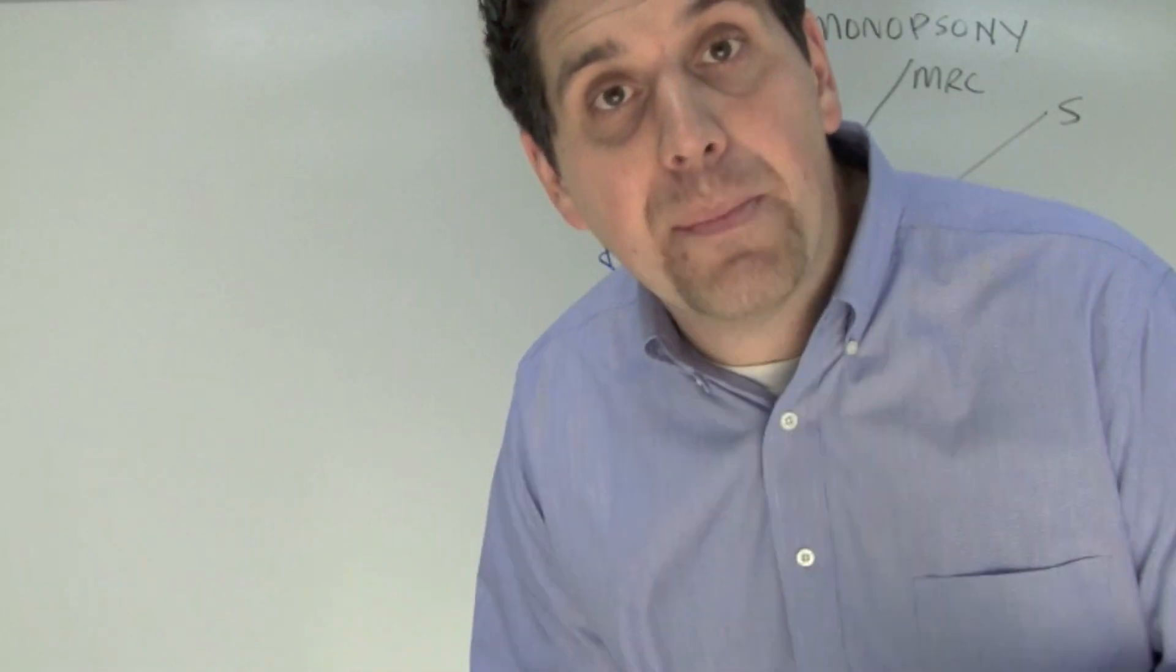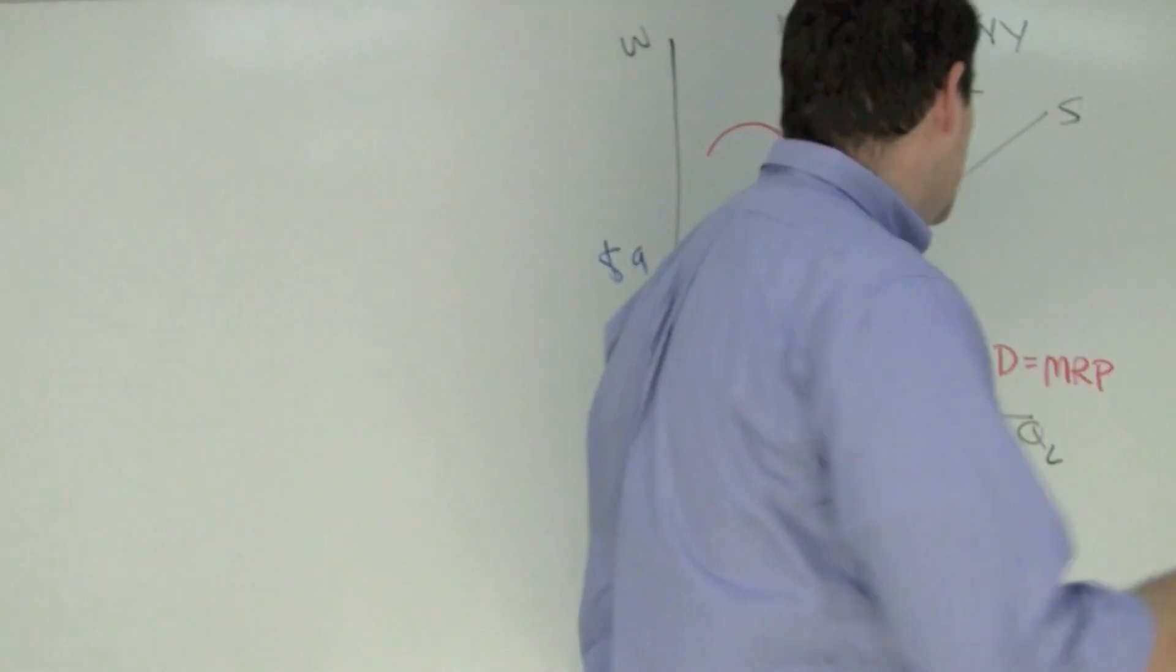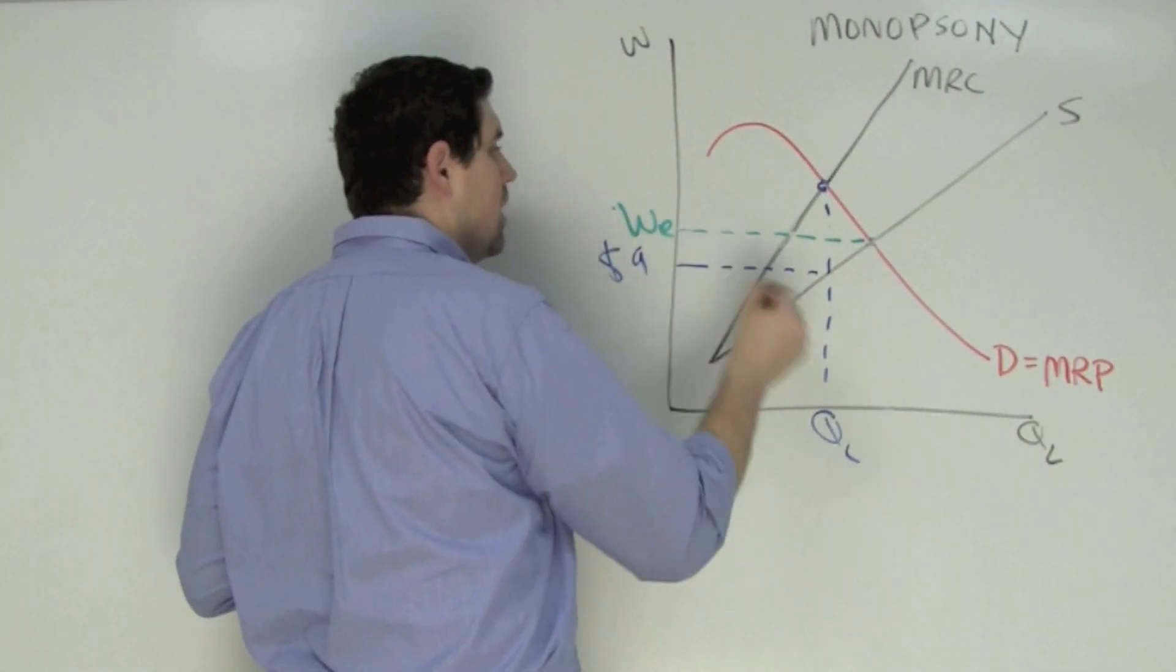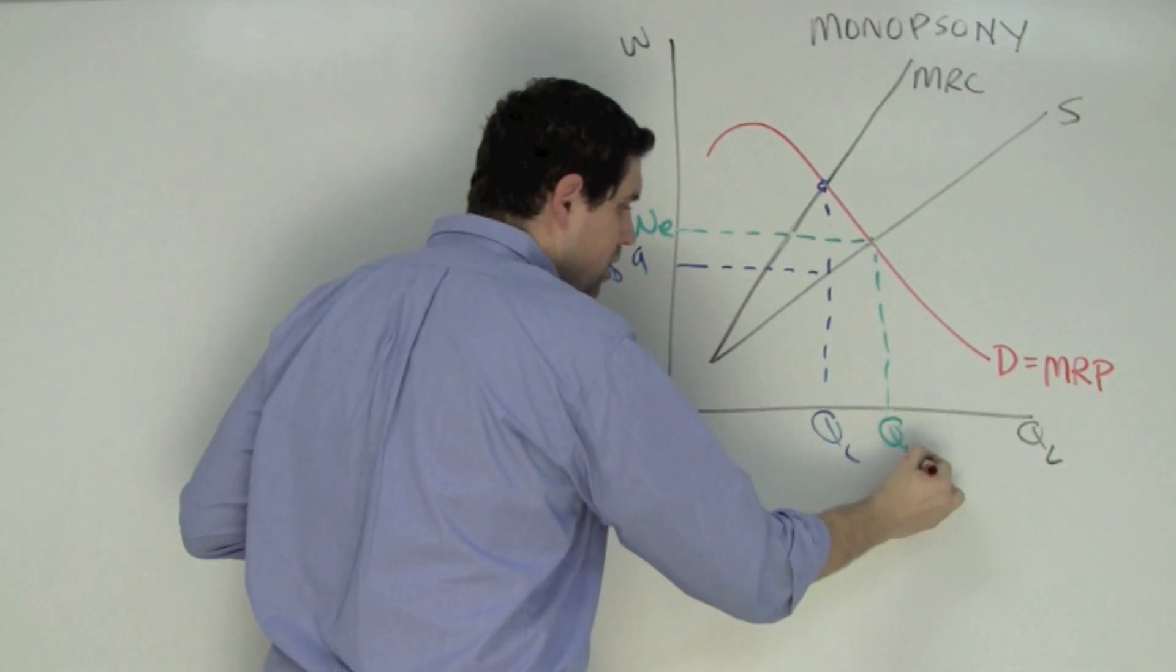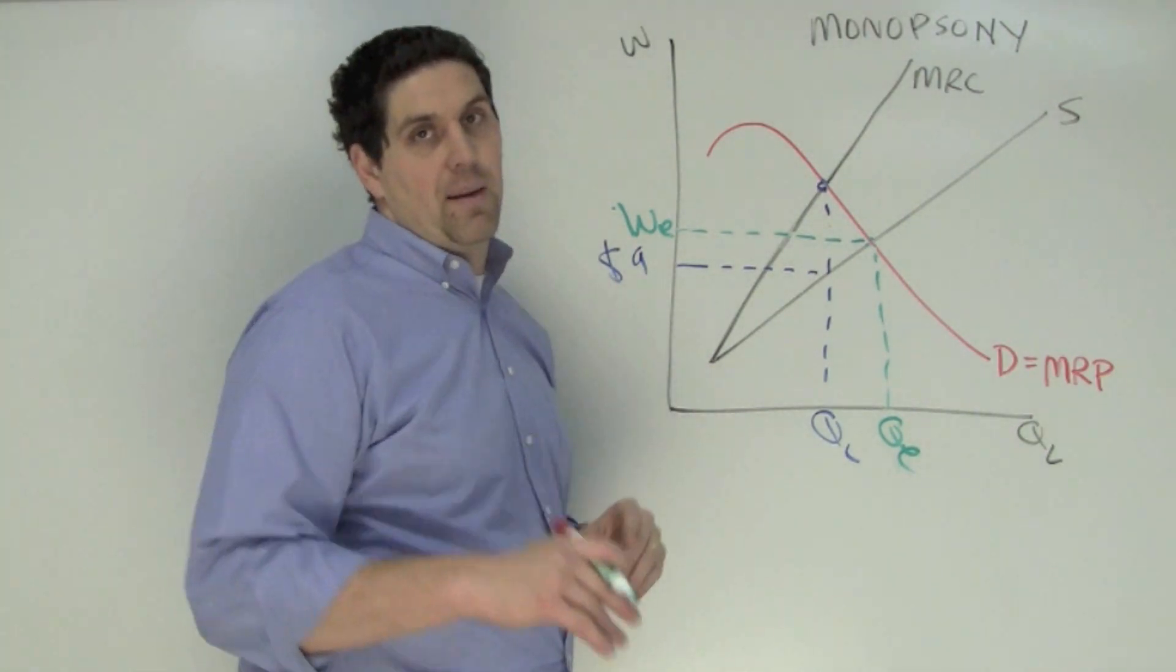In a monopsony, what they're actually doing is not what would happen in a perfectly competitive market. In this situation the wage in a perfectly competitive market would be here and the quantity would be here. They're hiring less workers than they would in perfect competition and they're paying them less than they would in perfect competition.